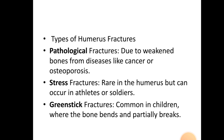Additional types of humerus fractures include pathological, stress, and greenstick fractures. Pathological fractures occur due to weakened bone from disease like cancer or osteoporosis. Stress fractures are rare in the humerus but can occur in athletes or soldiers. Greenstick fractures are common in children, where the bone bends and partially breaks.